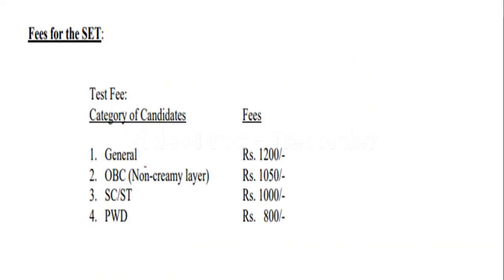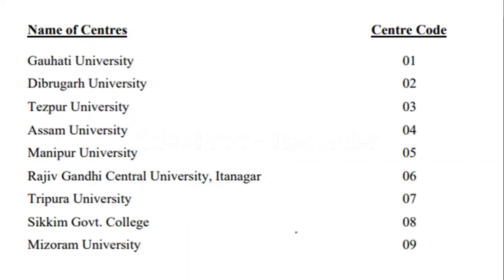If you go through the fee structure: for General merit, it is 1200 rupees; for OBC, it is 1050 rupees; for SC/ST, it is 1000 rupees; and for PWD, it is 800 rupees.